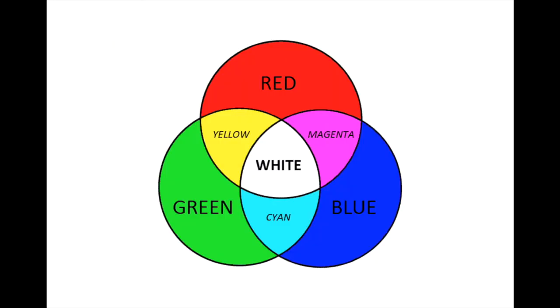So here's our Venn diagram of the visible colors of light. Remember: your primary colors are red, blue, and green. Your secondary colors are magenta, yellow, and cyan. And whenever we mix them all together - red, green, and blue - we get white.